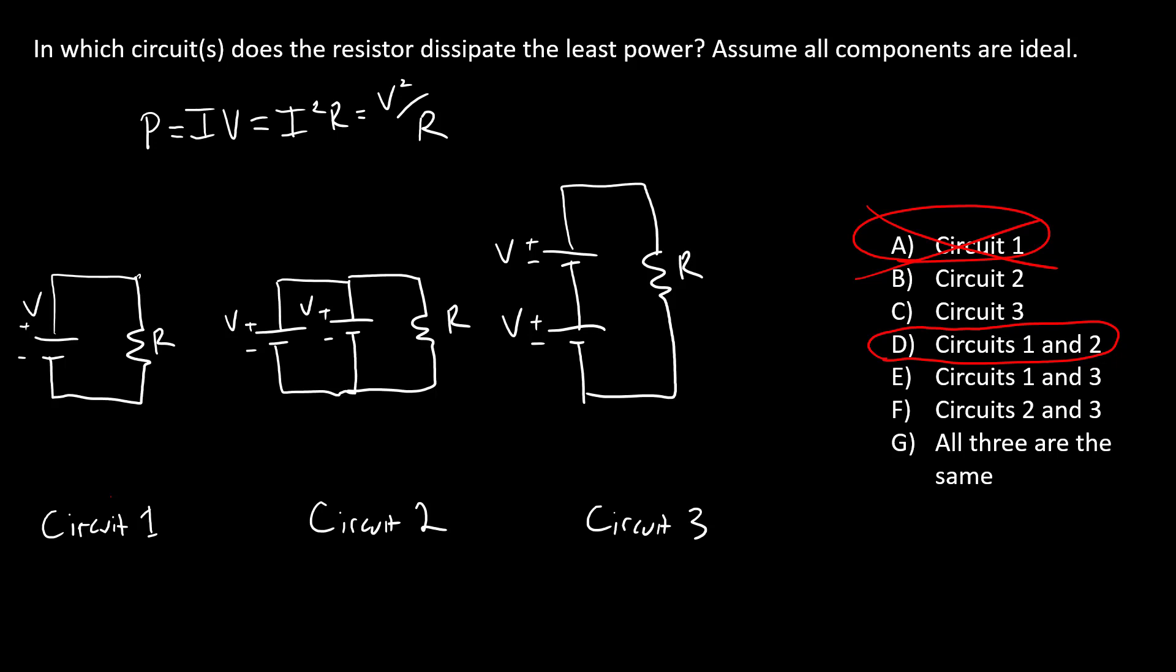So in this case, we have a voltage drop V over that resistor. Power dissipated by that resistor is going to be V squared over R. Let's skip over to this circuit. Note that we have two batteries in series. So the voltage drop over the resistor there is going to be two V.